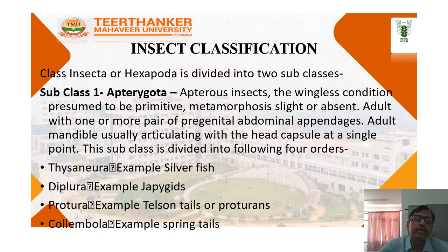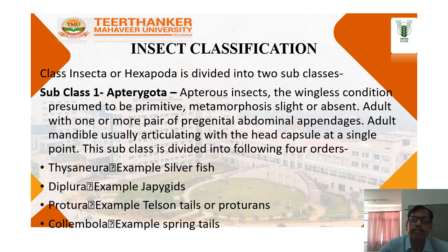Insect classification: Class Insecta or Hexapoda is divided into 2 subclasses. Subclass 1 is Apterygota. Apterygota insects are wingless, considered to be primitive. Metamorphosis slight or absent. Adult with one or more pair of pregenital abdominal appendages. Adult mandible usually articulating with the head capsule at a single point. This subclass is divided into following four orders: Thysanura, Diplura, Protura, and Collembola.